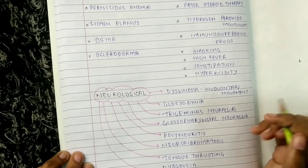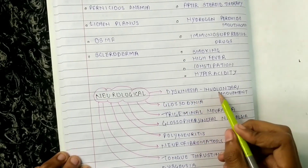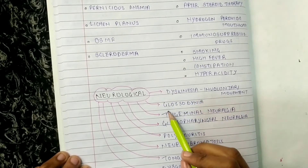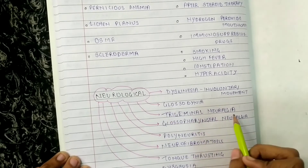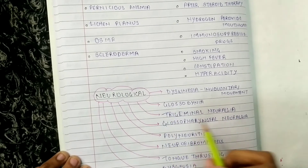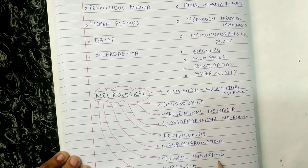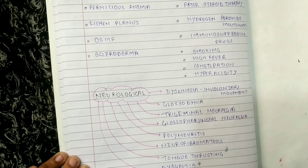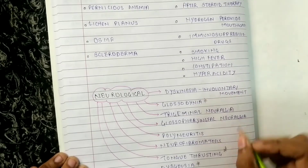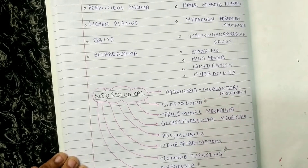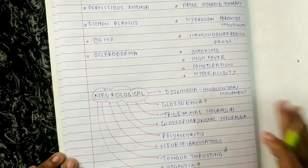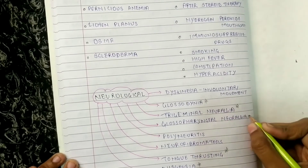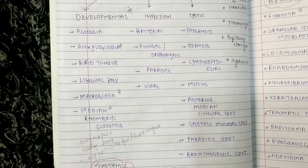Under neurological we have dyskinesia, involuntary movement, glossodynia, trigeminal neuralgia, glossopharyngeal neuralgia, polyneuritis, neurofibromatosis, tongue thrusting, and dysgeusia. Glossodynia and tongue thrusting are very very important, as are trigeminal neuralgia and glossopharyngeal neuralgia.